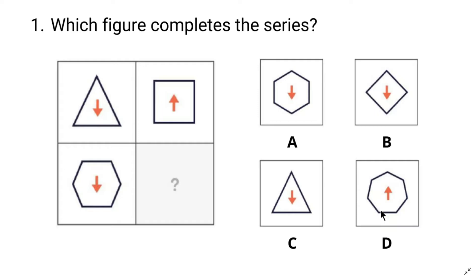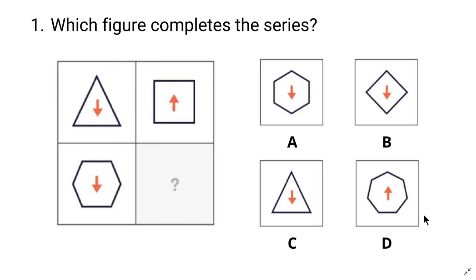But let's verify it using the pattern of the shapes. There is a triangle in the first image and a square in the next. A triangle has three sides and a square has four sides, so one side has been increased. In the second row, we can see a hexagon that has six sides, so we can assume the next shape should have seven sides. Checking the answers again, only D has a shape with seven sides. So the correct answer is D.